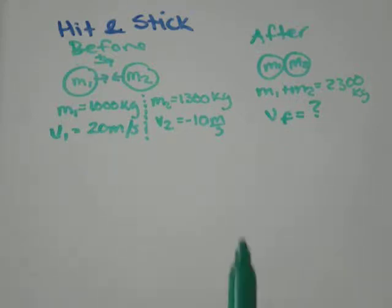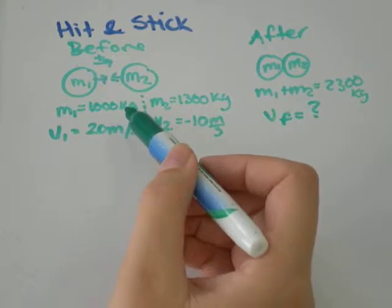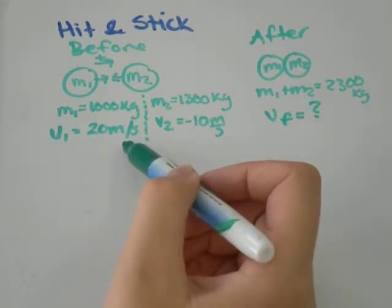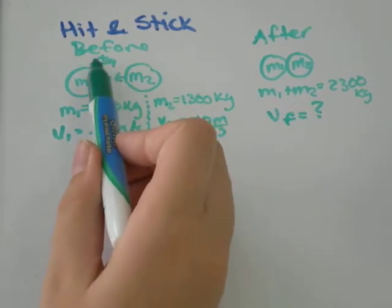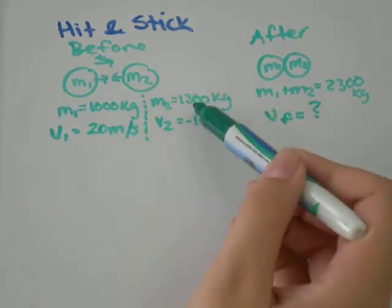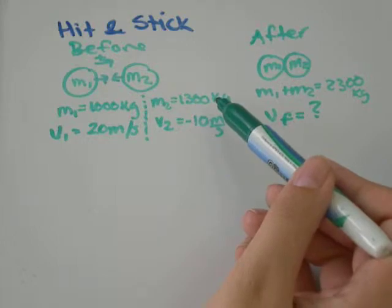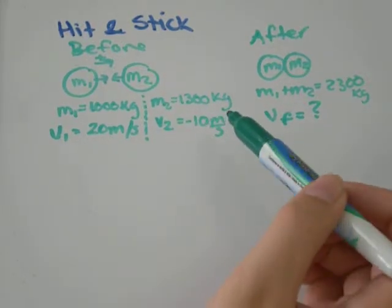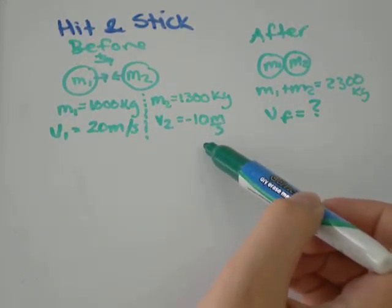So we've got an example. We have before, our first mass is 1000 kilograms and it's traveling at 20 meters per second in the positive direction. I've said that the positive direction is going to the right. Our second mass is 1300 kilograms and its velocity initially is negative 10 meters per second.